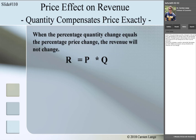What if the percentage quantity change is the same as the percentage price change? When these two are equal, the revenue will not change at all when the price changes. The price increases, quantity demanded decreases, but both effects are equally strong, so revenue will not change. The same is true if the price decreases — quantity demanded increases, both effects are equally strong, and revenue remains unchanged.